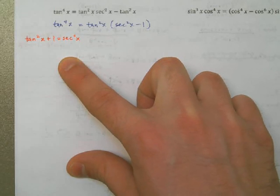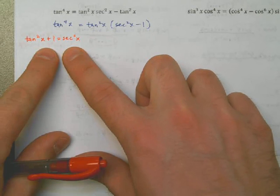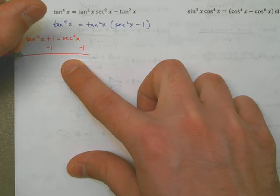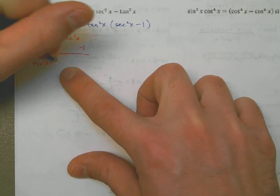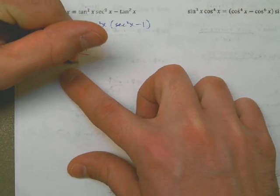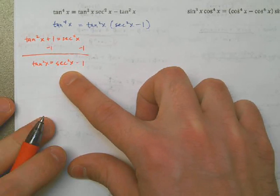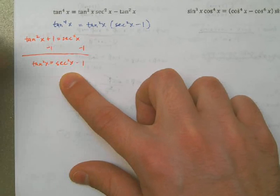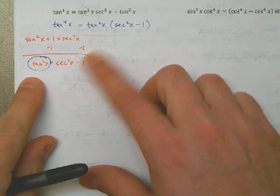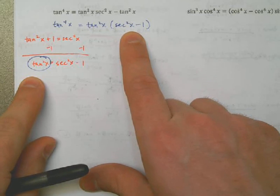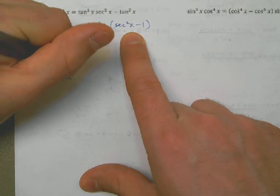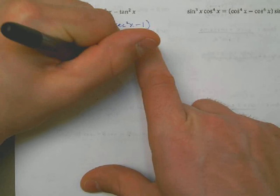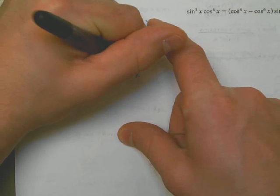I'm going to factor out cosine to the fourth. If I do that, I'm left with 1 minus cosine squared of x, times the sine of x. Convenient, right, that those end up the same. 1 minus cosine squared is the same as sine squared. And now I can see that I have sine squared times sine, which is sine cubed. I'm done with the proof, basically. And we're done.